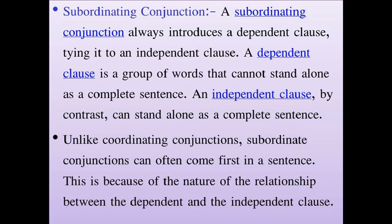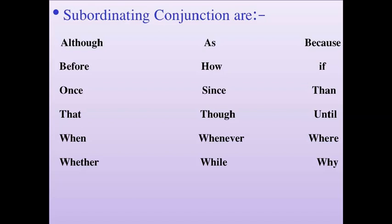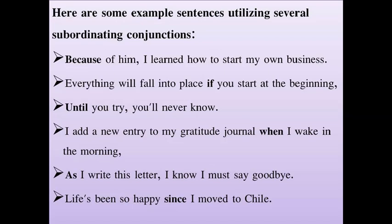Examples will make this clearer. Subordinating conjunctions include: 'although', 'before', 'once', 'that', 'when', 'whether', 'as', 'since', 'though', 'whenever', 'while', 'because', 'if', 'then', 'until', 'where', 'why'. Examples: 'Because of him, I learned how to start my own business.' 'Everything will fall into place if you start at the beginning.' 'Until you try, you will never know.' 'As I write this letter, I know...' — these are some examples of subordinating conjunctions.